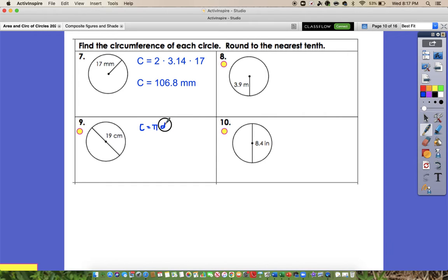So we're going to be multiplying 3.14 times 19, and when we do that, we should get 59.7 centimeters. So still easy just substituting into that formula.